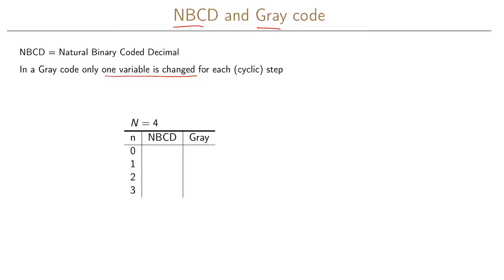For the case where n equals 4, that is four different numbers to code: for NBCD coding, 0 is coded as 00, 1 as 01, 2 as 10, and 3 as 11. When we go from 1 to 2 in NBCD coding, two variables change — the first and the second. And if we look at this cyclically, going from step 3 back to step 0 also changes both variables.